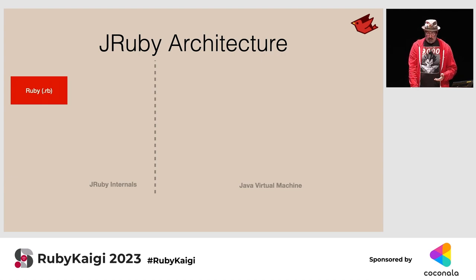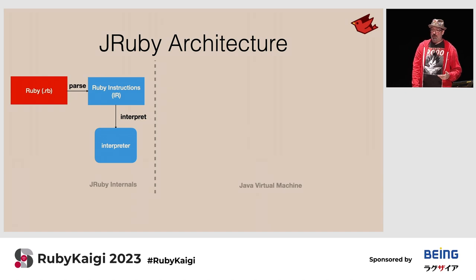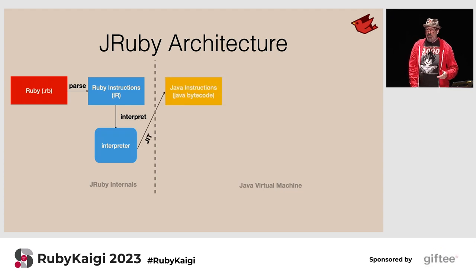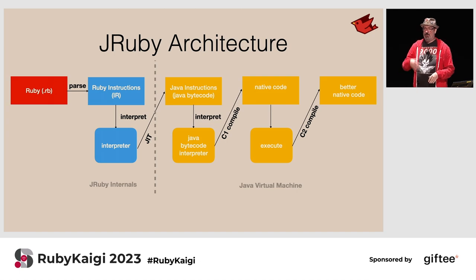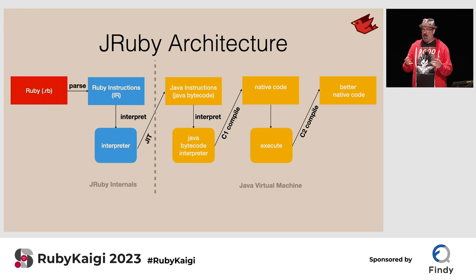Let's look at this more graphically. Here's the architecture of JRuby today: we pull in Ruby code on the left, it goes into our parser and compiler and gets turned into Ruby Intermediate Representation. We interpret that for a while until the code looks hot enough that we want to compile it to JVM bytecode. We then generate JVM bytecode using features like invokedynamic to optimize it, and the JVM takes it from there — interpreting bytecode, doing quick optimization, then more aggressive optimization later.